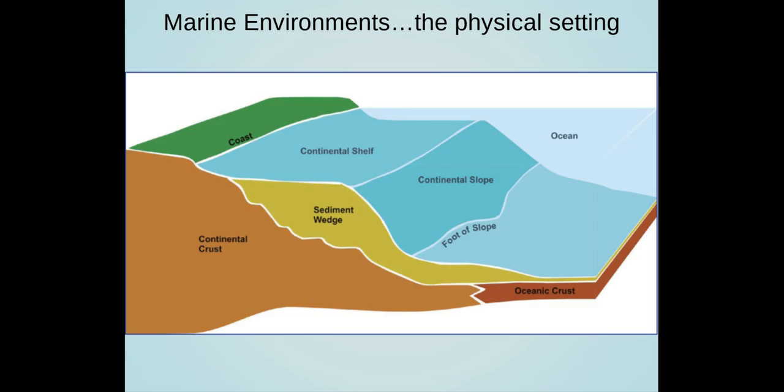The physical setting: the continental crust is mostly granite, it's thicker and less dense than oceanic crust. The oceanic crust is mostly basalt, it's thinner and more dense so it usually sinks below the continents. The continental shelf is the relatively shallow part of the seafloor that adjoins the continents. The continental slope is the area where the seafloor drops steeply at the outer edge of the continental shelf, and the continental rise is the accumulation of mudslide sediments at the base of the slope.